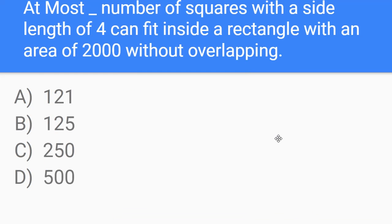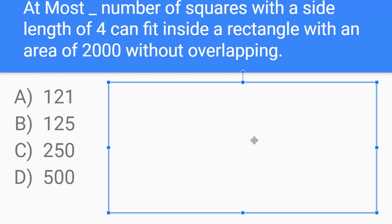So now our next question is, At most, the blank number of squares with a side length of 4 can fit inside a rectangle with an area of 2,000 without overlapping. So what we can do for this question is, because one side of a square is 4, the area of the square would be 16, because 4 times 4 is 16.